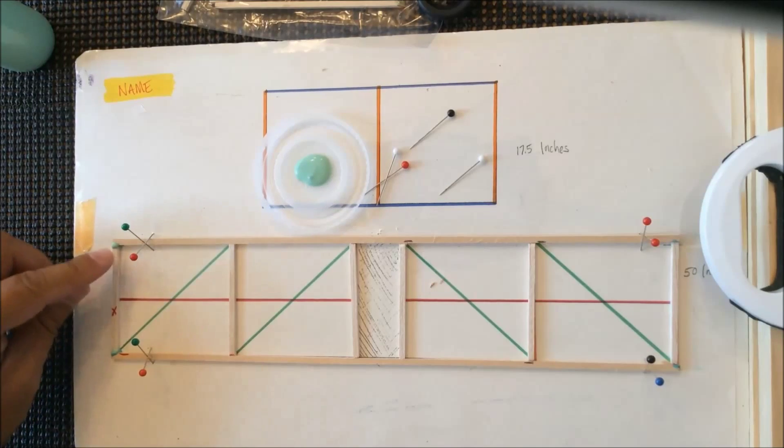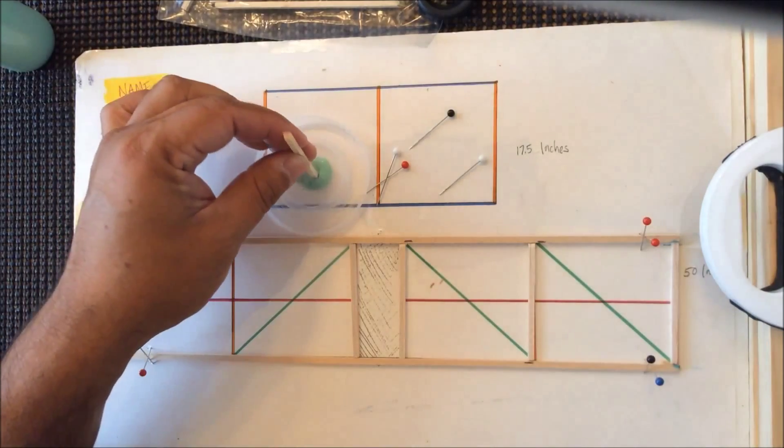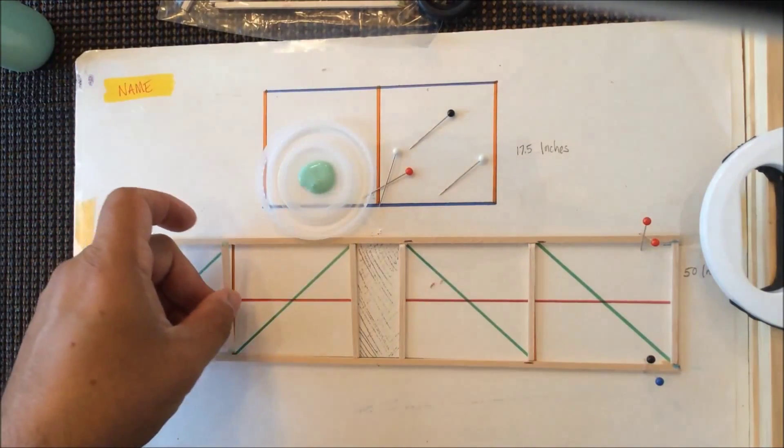Before the glue sets, you want to make sure that your stick that you just cut and glued lines up with the line that was drawn on there previously. Continue doing so all the way across. I'm going to glue all these in place at the same time.